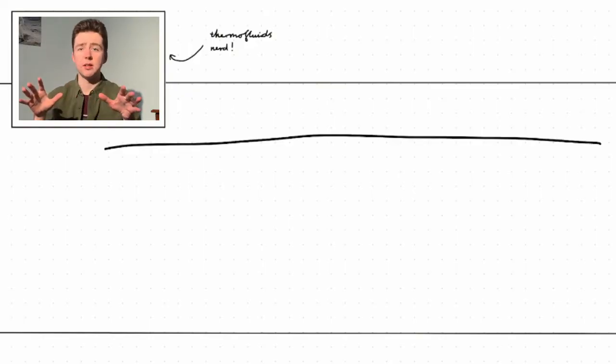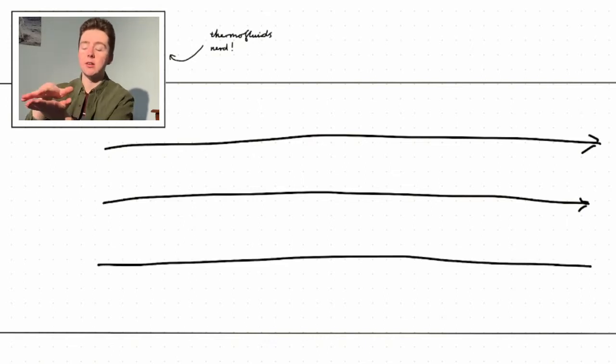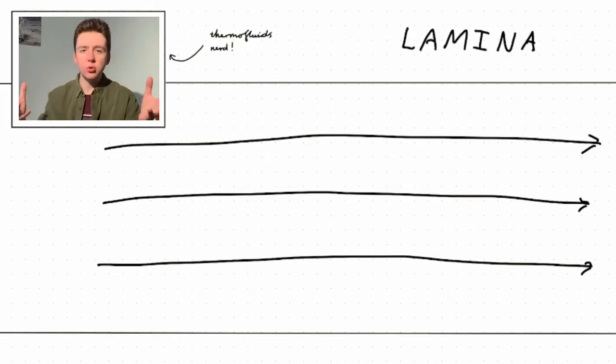So what is laminar flow? There are two flow types: laminar and turbulent. Laminar flow is simple to explain. If you imagine a pipe with fluid flowing along it, laminar flow is when the fluid is flowing in parallel layers — or laminae. All the fluid is moving in the same direction uniformly. There's no mixing, no vortices, no swirling.